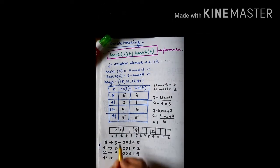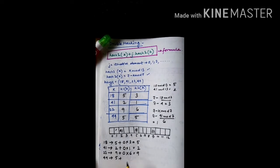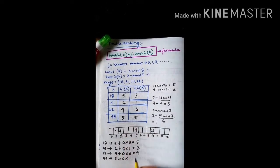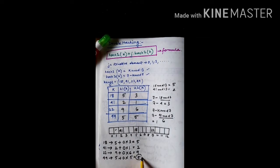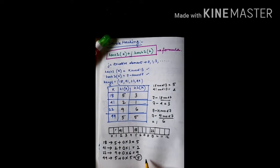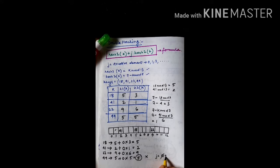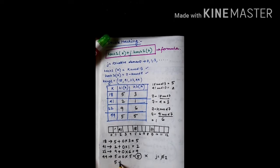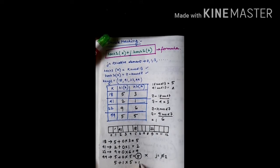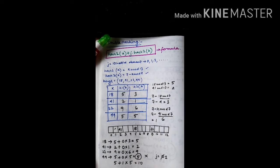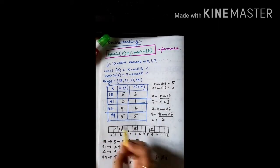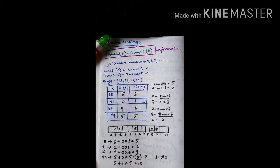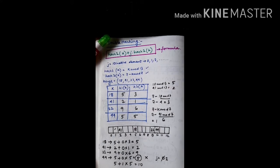For the fourth key 44: hash function 1 is 5, j is 0, hash function 2 is 5, giving index 5. But index 5 is not empty. So we increment j to 1 and apply the formula again: 5 plus 1 times 5 equals 10. Index location 10 is empty, so we insert key 44 at index 10. Starting from j equals 0 and incrementing until an empty index is found, all keys can be inserted.